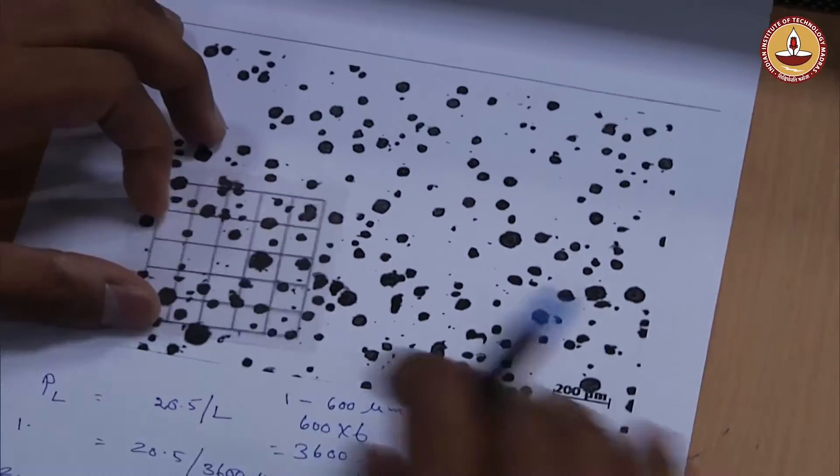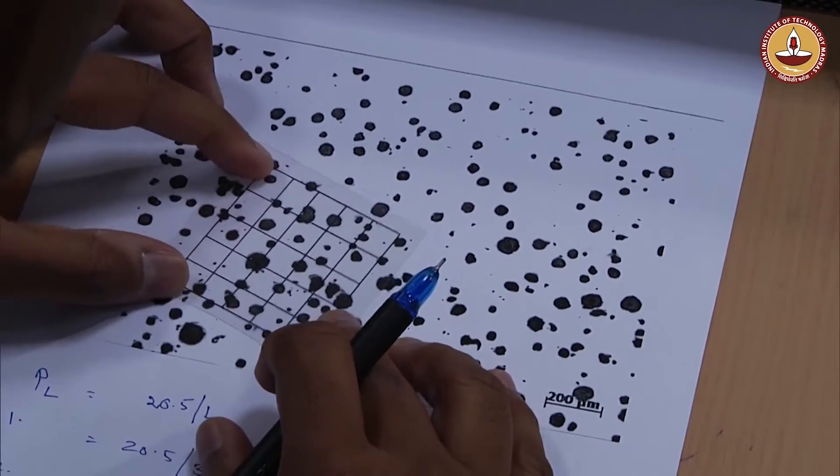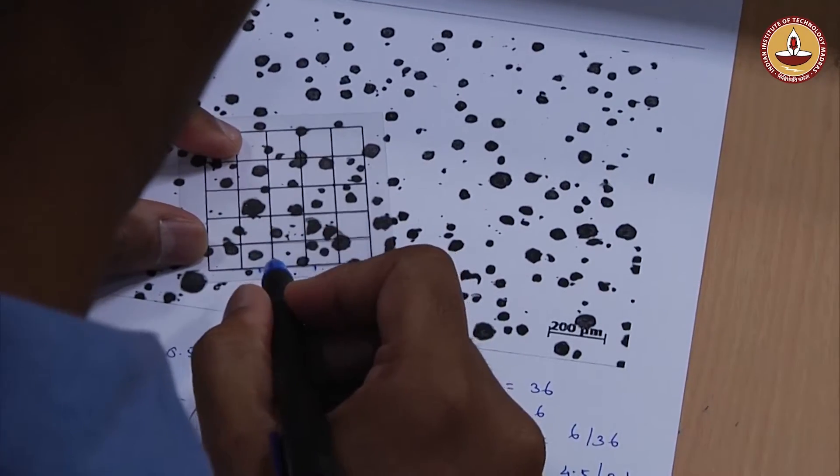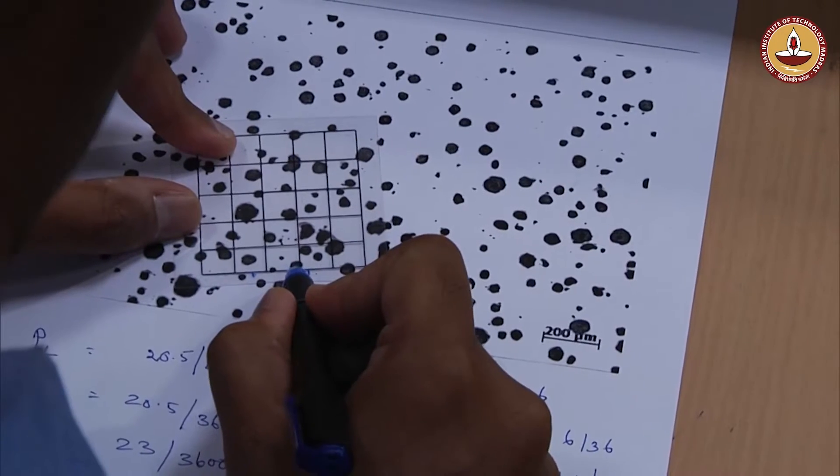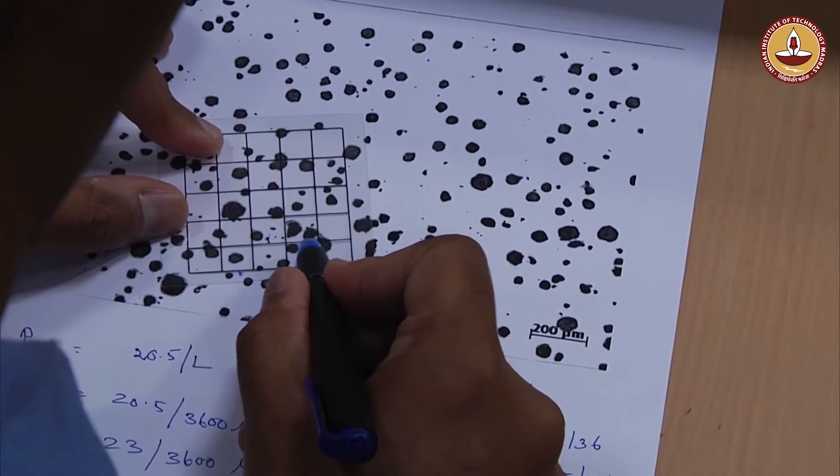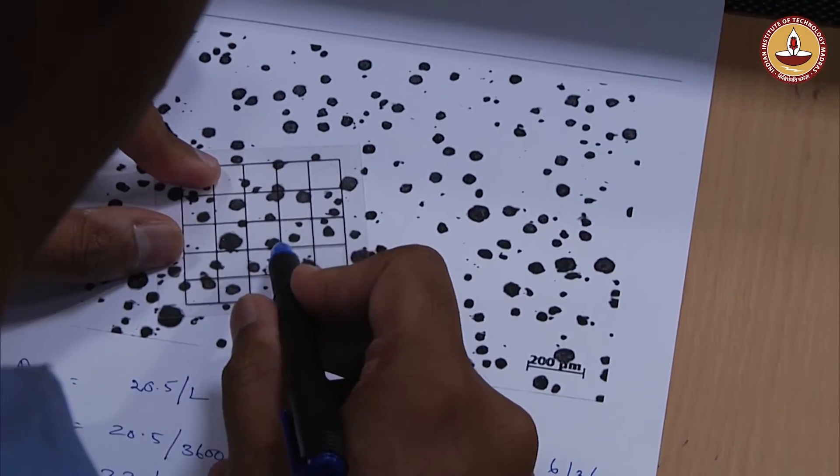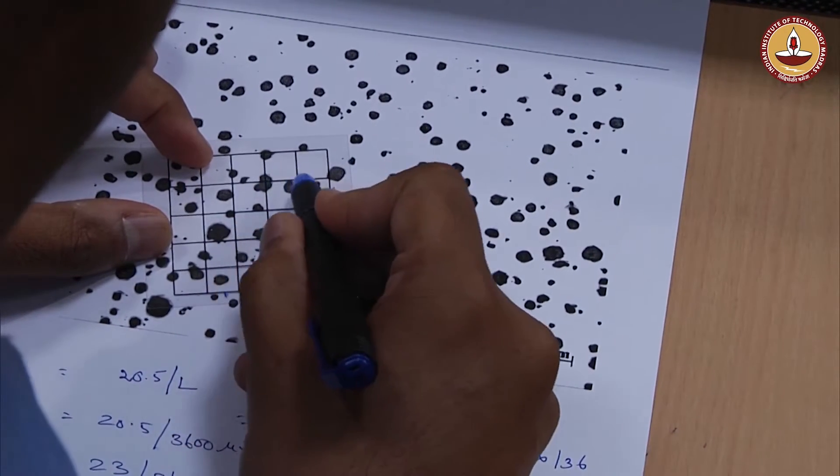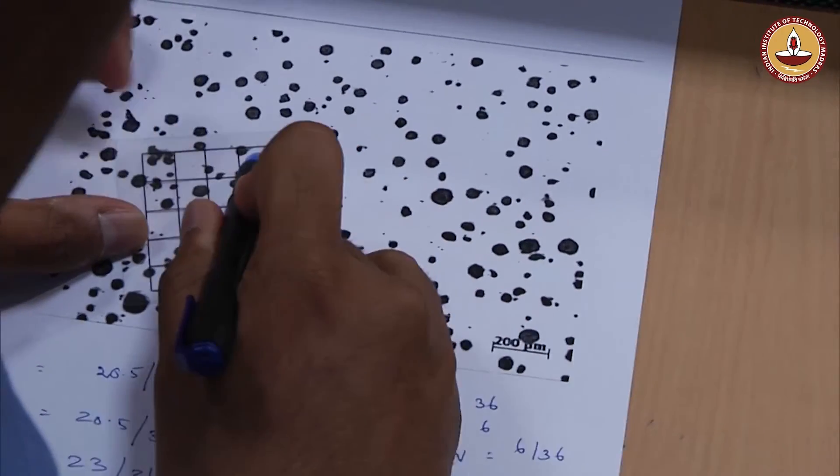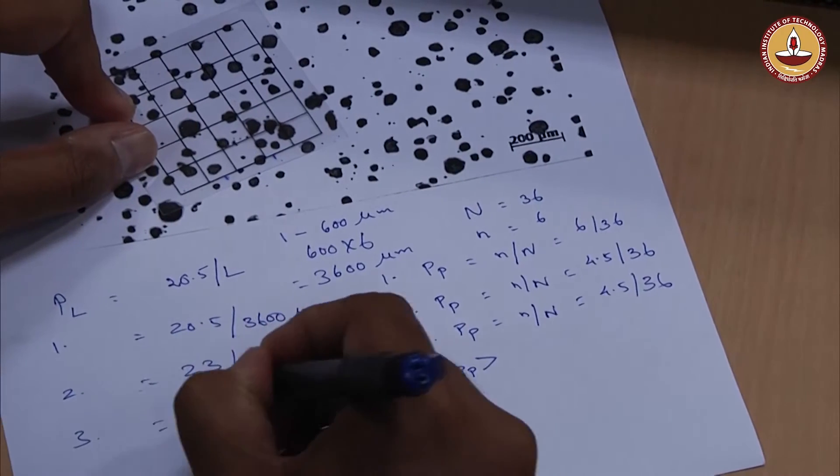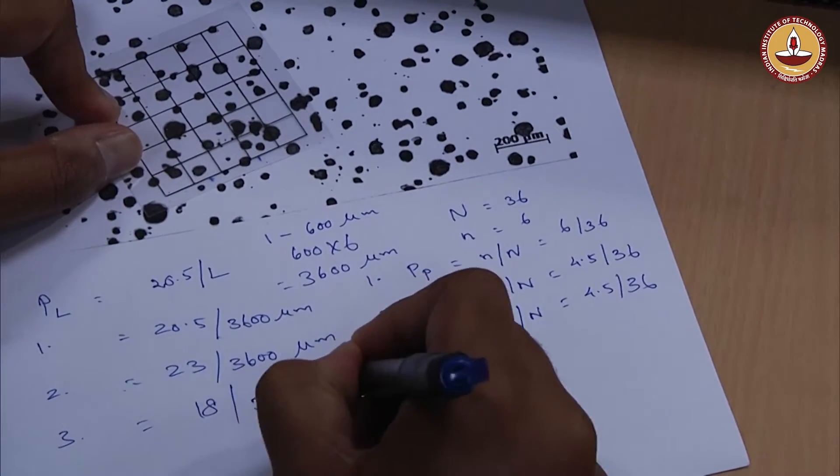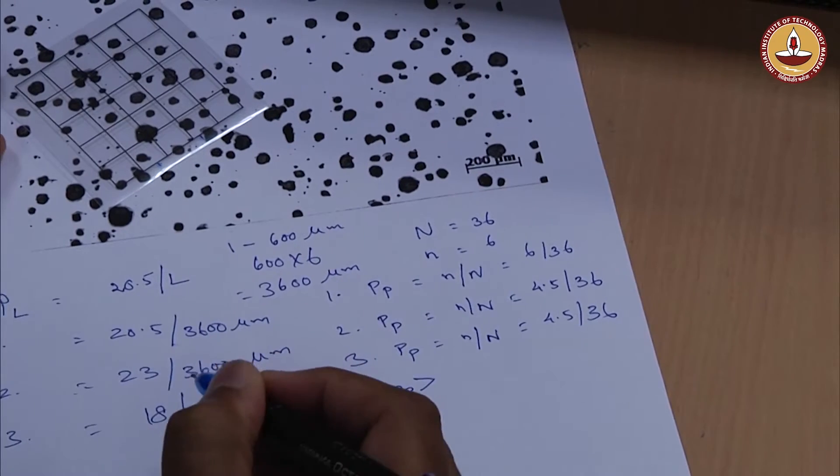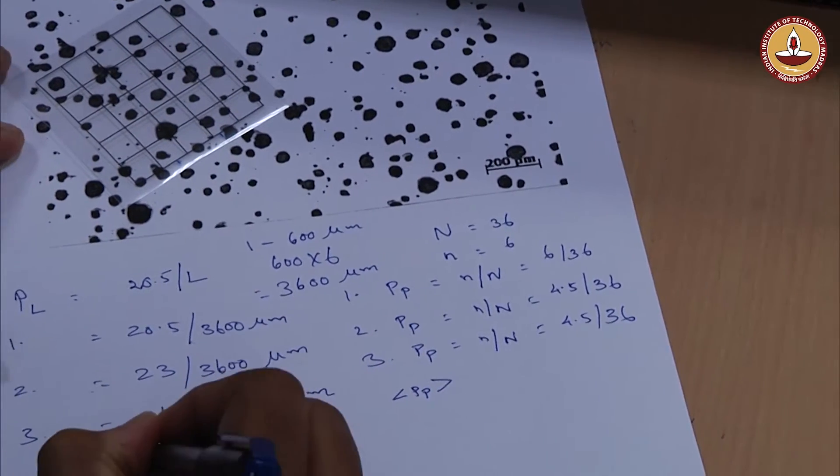Event 3, I will measure here randomly. Now I am counting: half, 1 and half, 2 and half, 3 and half, 4 and half, 5, 6, 7, 8, 9, 9 and half, 10, 11, 12, 13, 14, 15, 16, 17, 17, 18. Event 3 gives me 18 divided by 3600 micron. Like that we will take this and calculate the average PL for the number of events.